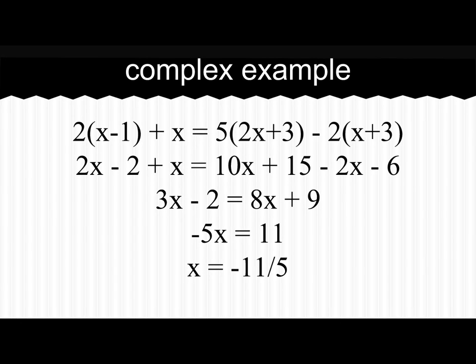A complex example would be 2(x-1) + x = 5(2x+3) - 2(x+3). You would distribute the 2, then combine like terms, then add 2 on both sides, and then subtract 8x on both sides to get negative 5x equals 11, and then divide by negative 5, which equals negative 11 over 5.